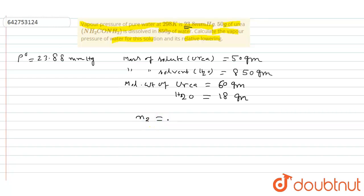n₂ equal to 50 by 60 equal to 0.83, and number of moles of H₂O that is n₁ equal to 850 by 18 equal to